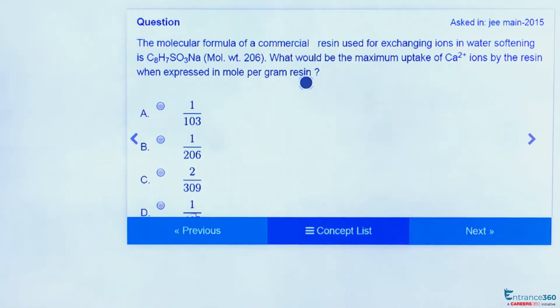Hello students, today we will discuss a question from JEE Main 2015 from the chapter on basic concepts of chemistry. The question is: the molecular formula of a commercial resin used for exchanging ions in water softening is C8H7SO3 sodium ion. What would be the maximum uptake of Ca2+ ions by the resin when expressed in mole per gram resin?